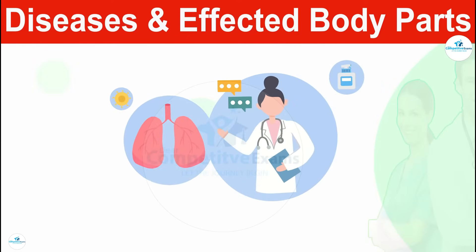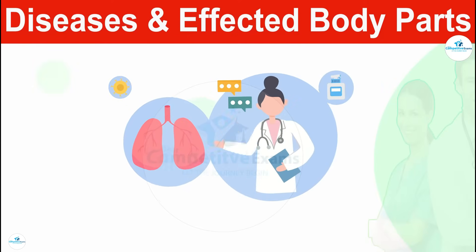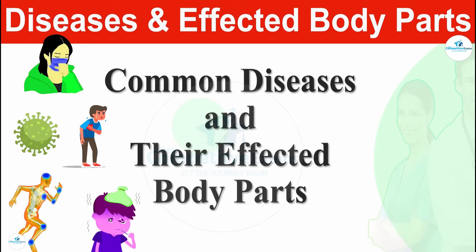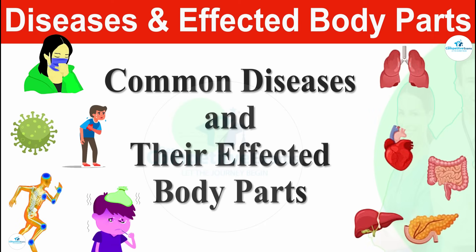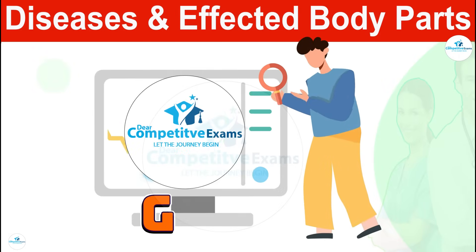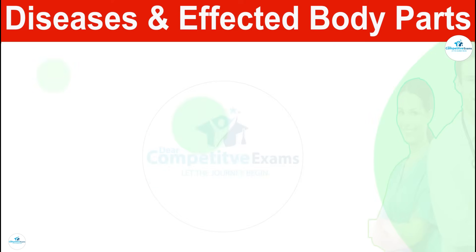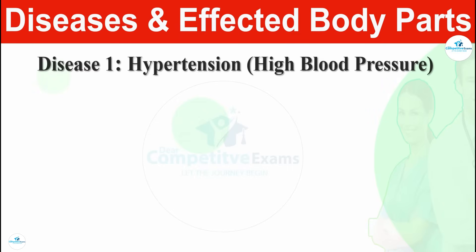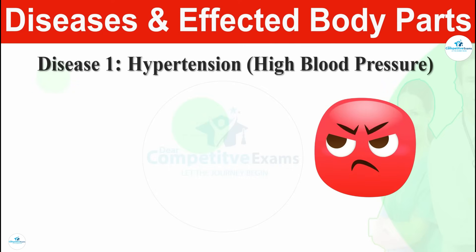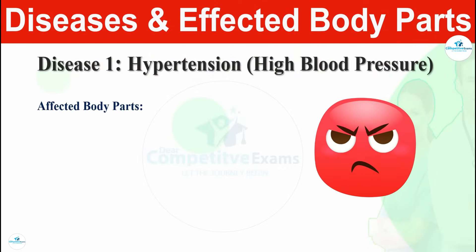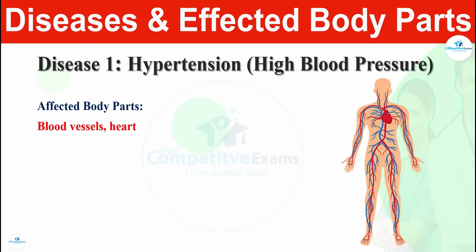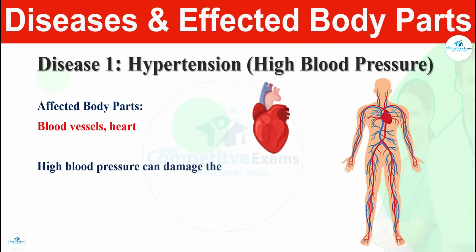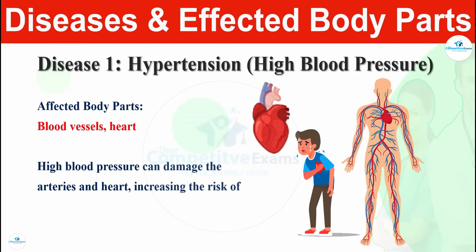Today we are going to learn about common diseases and their affected body parts. The first disease is hypertension, also known as high blood pressure. This affects the blood vessels and the heart. High blood pressure can damage the entire arteries and heart, increasing the risk of heart disease, stroke, and other cardiovascular problems.